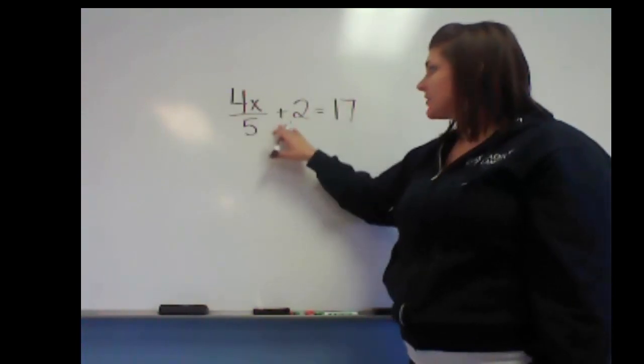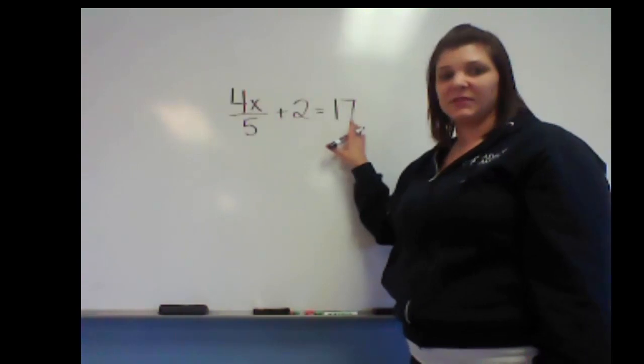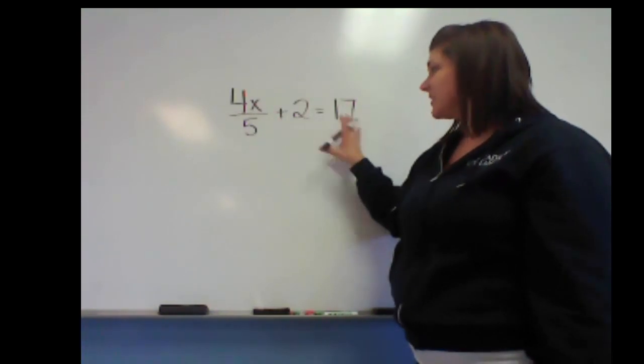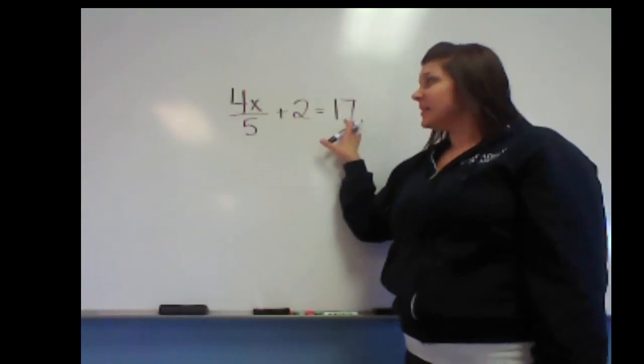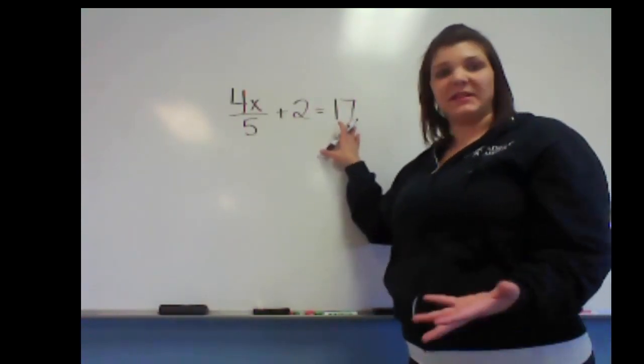Notice that there's only x terms over here, but with that, we've got constants on both sides. Now, since I'm going to look at this and I'm going to say, well, 2 and 17 are both our constants. Neither of them are fractions. They're both whole numbers. They're going to be easy to work with.